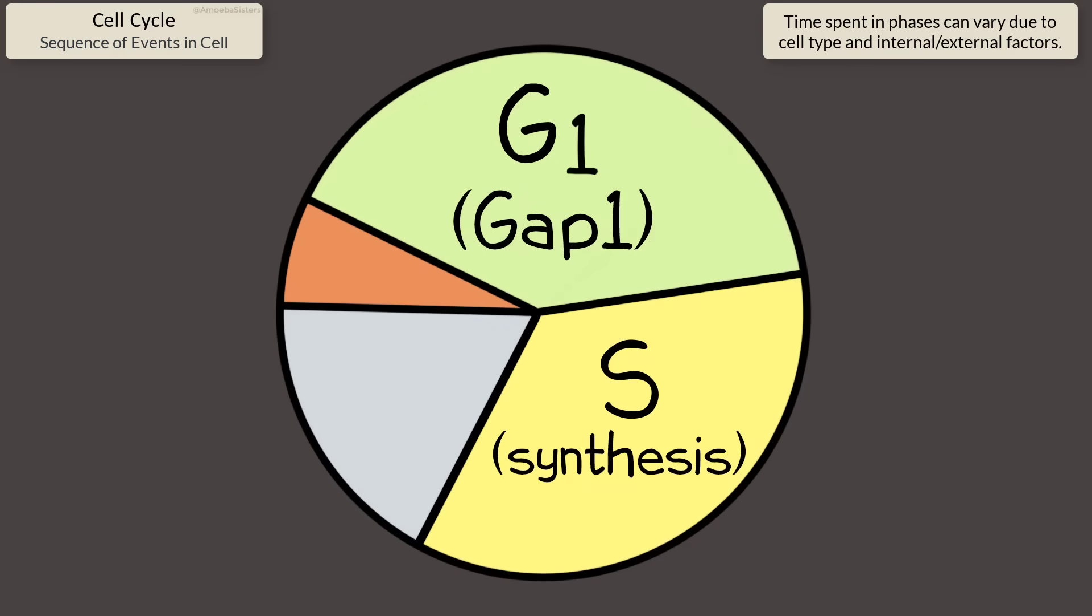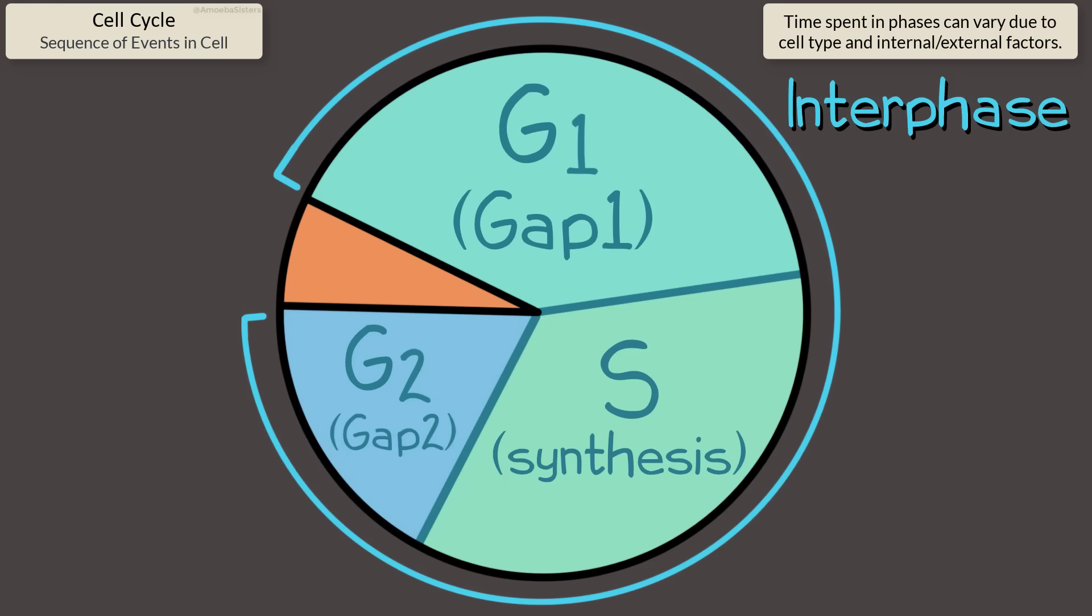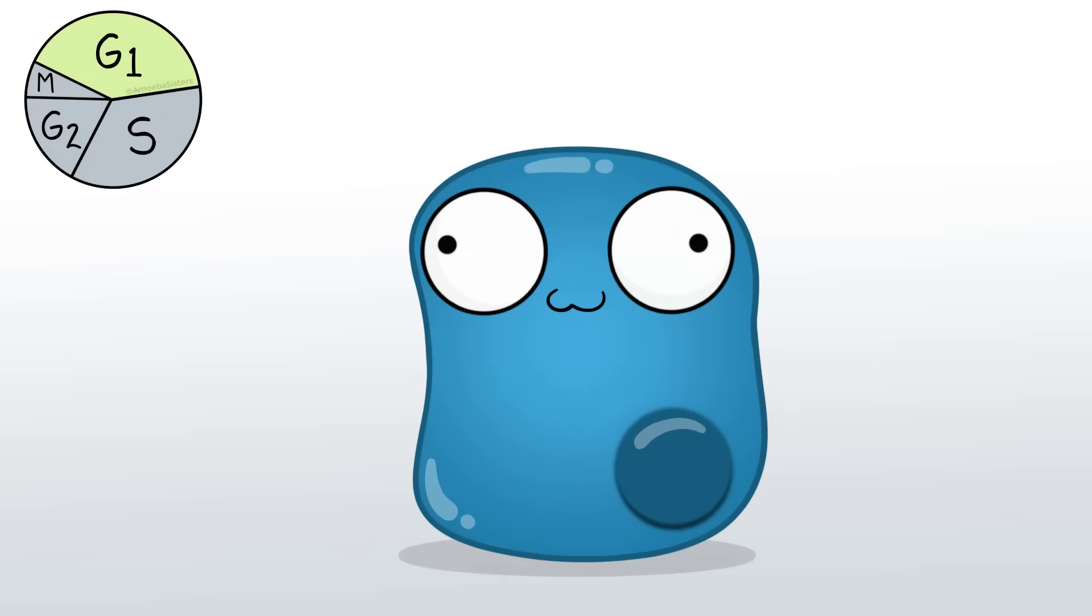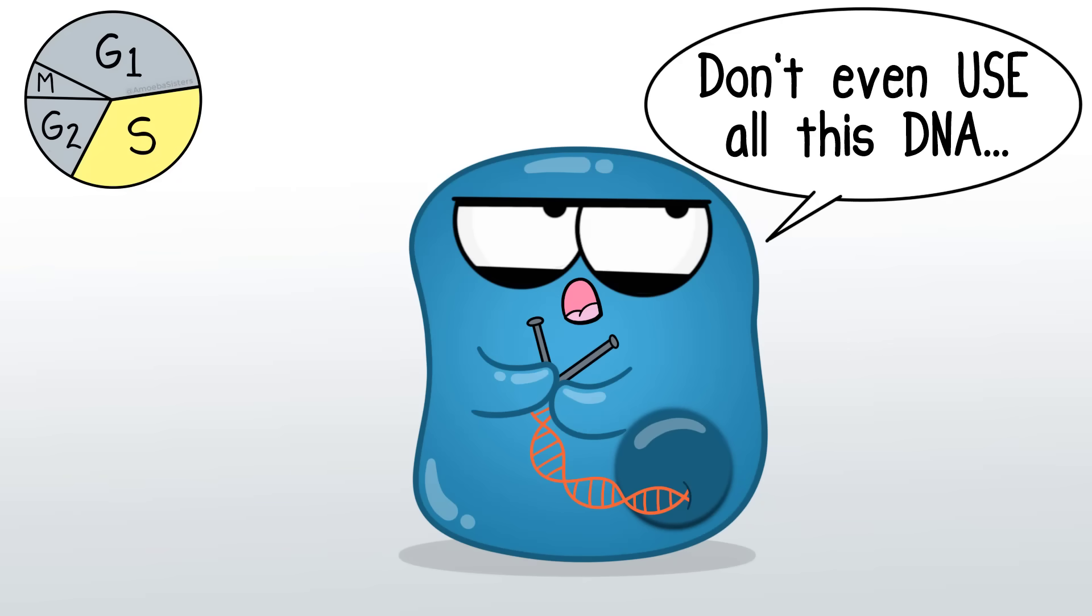We have G1, S, G2. All three of those are part of interphase. Then we have M phase where mitosis will happen. During G1, the cell individually itself grows. Then it replicates its DNA in S phase.